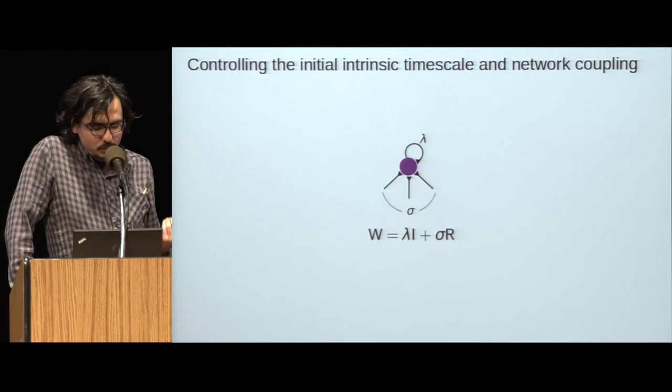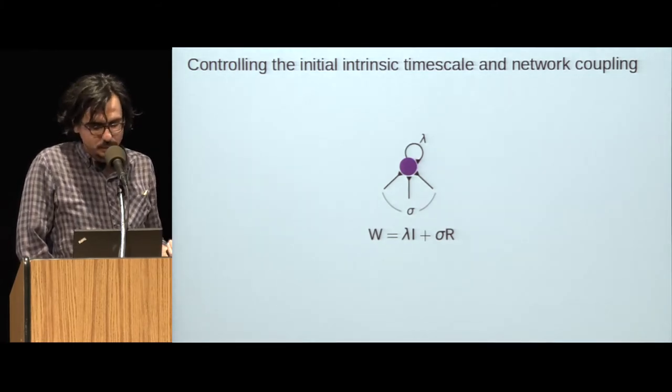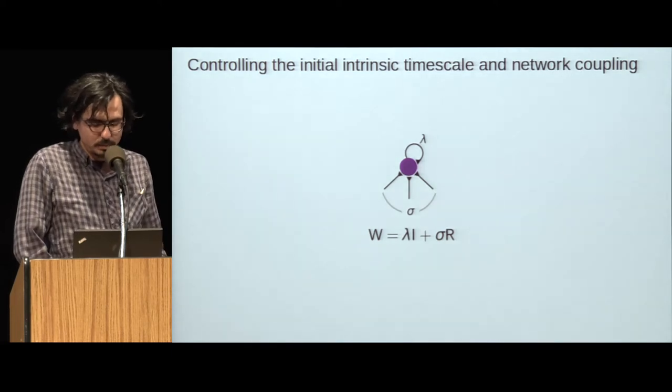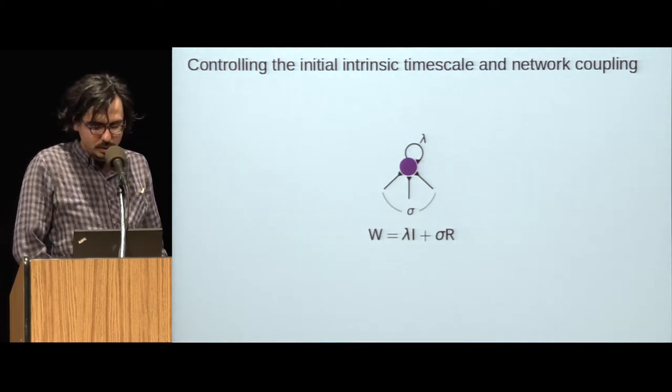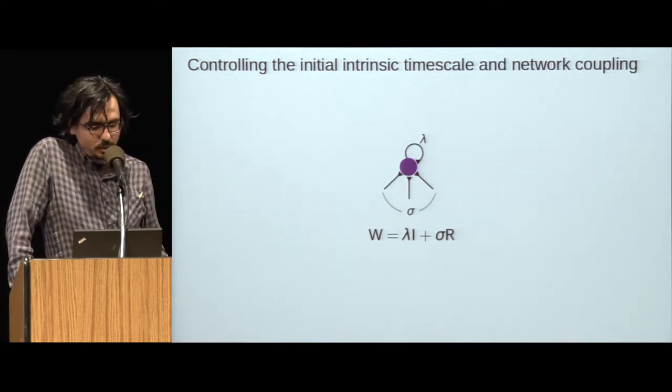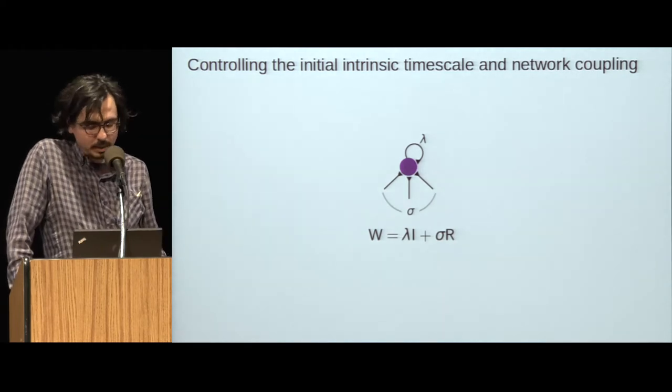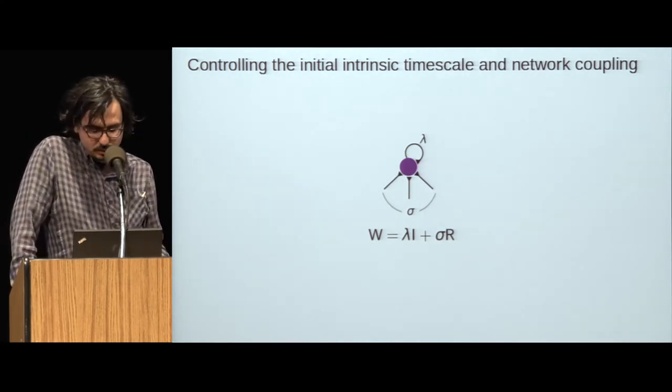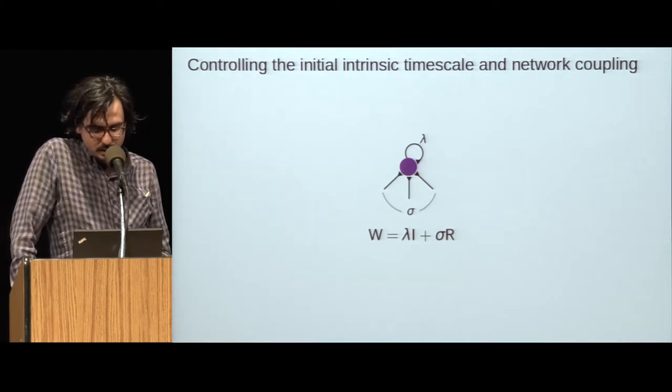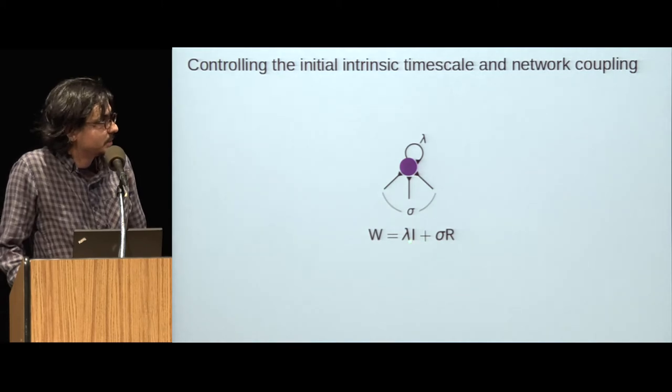Neural networks are extremely degenerate models, which means that for any given task, they generally have very large solution spaces. The nature of the solution reached by the network might depend on how it's initialized. We were worried about this because it raises the possibility that whatever result we may get could just be a consequence of the particular initialization we happen to choose. Initial exploration with the network suggested that the initial recurrent connectivity matrix is the most important factor. So we parameterized the initial recurrent connectivity matrix by two hyperparameters, lambda and sigma. Lambda controls the initial intrinsic time scale of the individual units, and sigma controls the strength of the initial coupling between the recurrent units. Mathematically, we expressed the initial recurrent connectivity matrix as W = λI + σR.